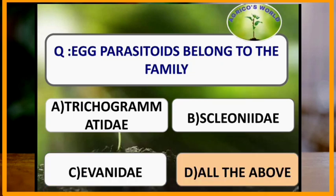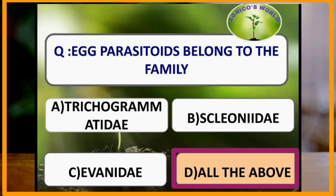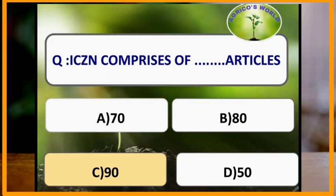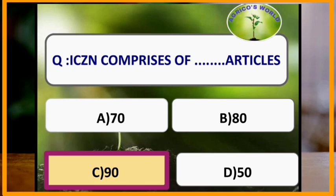Egg parasitoids belong to the families Trichogrammatidae, Selenidae and Evanidae — all three families contain egg parasitoids. ICZN (International Code of Zoological Nomenclature) comprises 90 articles grouped into 18 chapters.